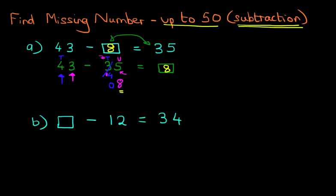Onto the second one. This time we've got the missing number first. So what do we have to do? We have to take the 12 and move it to the right-hand side. So let's do that.